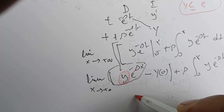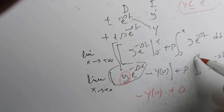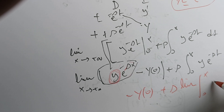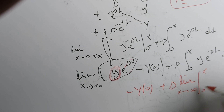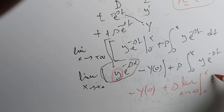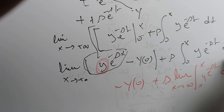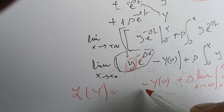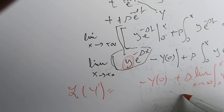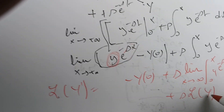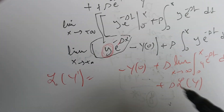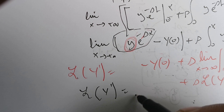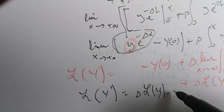So that term goes to zero, and we're left with minus Y(0) plus S times the limit as X goes to infinity of the integral from zero to X of e^{-st} Y dt. This limit is just the Laplace of Y by definition. Therefore, the Laplace of Y prime is S times the Laplace of Y minus Y(0).